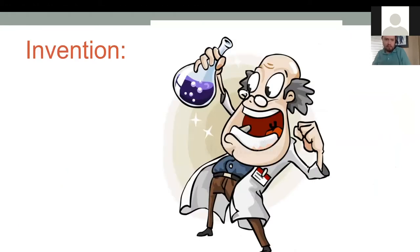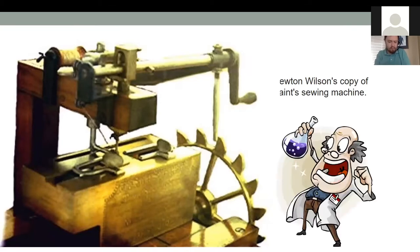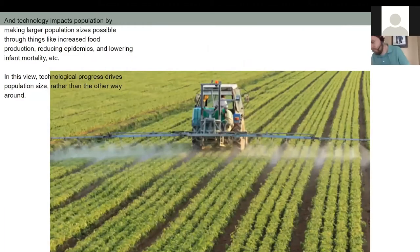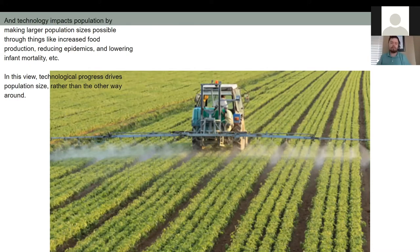In the first model, technological progress is created primarily by invention and innovation. Creative people invent new technologies, and this is the primary driver behind progress. Once they're invented, they exist. They don't go away. For example, once a sewing machine is invented, clothing becomes cheaper, more readily available, because we have technology driven by invention. In this picture of human progress, population sizes impact the rate of progress only in as much as they impact the number of creative people out there who are inventing new things. But there is a feedback. The technology impacts population by making larger population sizes possible through things like increased food production, reducing epidemics—it's humorous that I wrote that before COVID-19 happened—and lowering the infant mortality rate. In this view, technological progress drives population size rather than the other way around.